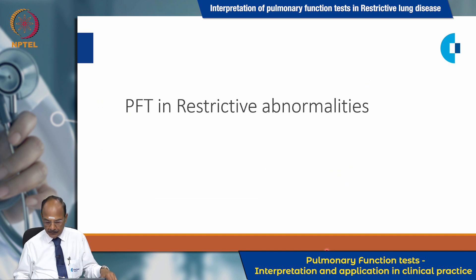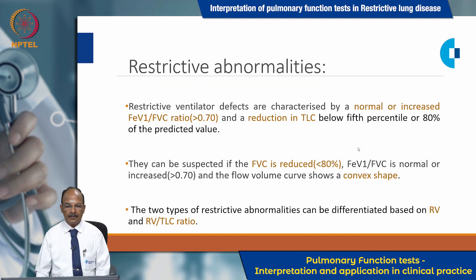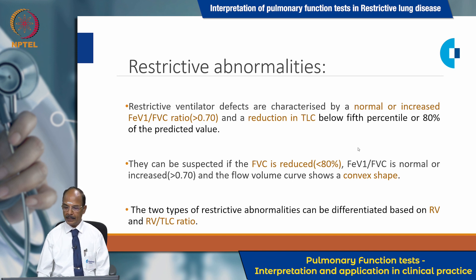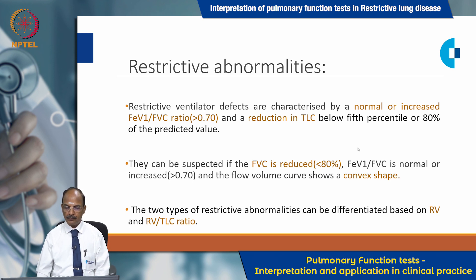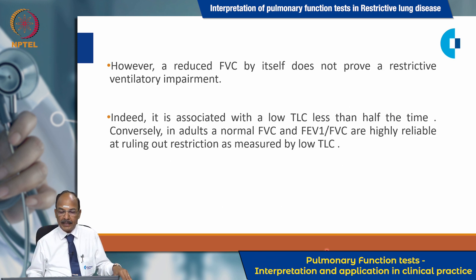What are the PFT patterns in restrictive lung diseases? Restrictive ventilatory defects are characterized by a normal or increased FEV1/FVC ratio, which is more than 70 percent, and a reduction in TLC below the fifth percentile or 80 percent of the predicted value. They can be suspected if FEV1 is reduced (less than 80 percent), FEV1/FVC is normal or increased (more than 70 percent), and the flow-volume curve shows a convex shape. However, a reduced forced vital capacity by itself does not prove restrictive ventilatory impairment, as it is associated with a low total lung capacity less than half the time.